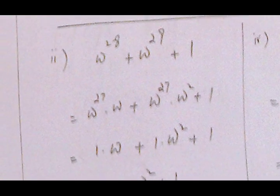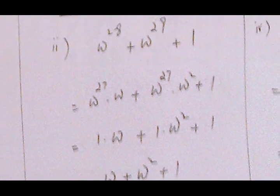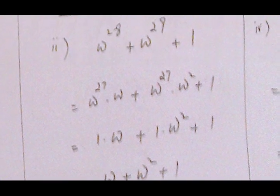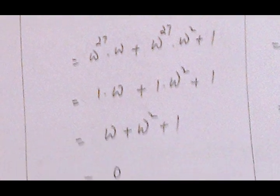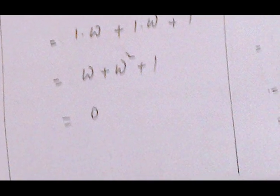In the next question we have ω²⁸ + ω²⁹ + 1. We write ω²⁸ = ω²⁷ · ω and ω²⁹ = ω²⁷ · ω². Since ω²⁷ = 1 (it is a multiple of 3), and every power that is a multiple of 3 equals 1, by the end we have the sum of the three cube roots of unity which equals 0.